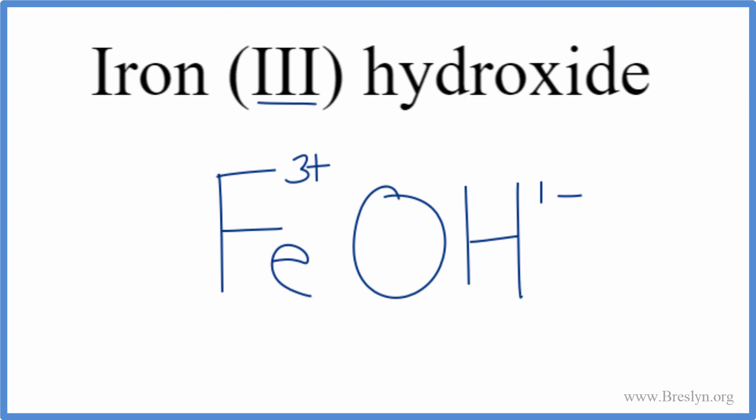So we can use something called the crisscross method here to do that. We can move the 1 over here, and the 3 over here. We don't write the 1 by convention. Let's get rid of this charge stuff. And then we do need to put parentheses around the hydroxide because it's a polyatomic ion. We have three of these hydroxide ions.